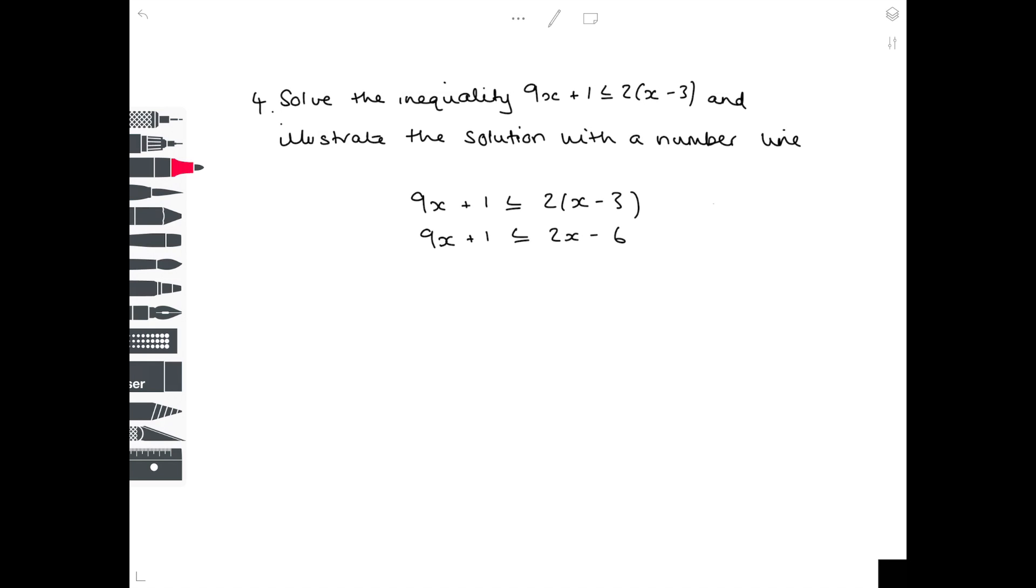Let's get all of our x's on the left-hand side by taking away 2x from both sides. To get rid of the plus 1 on the left-hand side, we need to take it away from both sides. And then divide through by 7 in order to get x by itself. So x is less than or equal to minus 1.